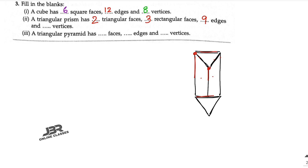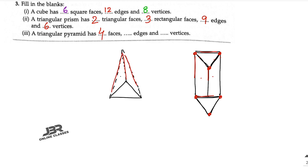Next vertices — and the last problem: a triangular pyramid. Draw a triangle, then complete the pyramid shape. A triangular pyramid has how many faces? One, two, three, and the bottom one — total four faces. Edges: one, two, three, four, five, six — total six edges. Vertices: three in the bottom plus one on top — total four vertices. These are your answers.